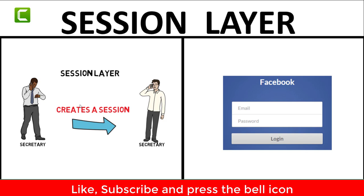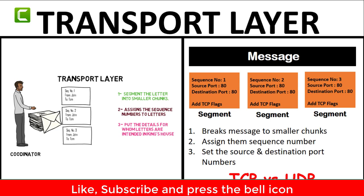In the third layer, the session layer, the secretary established a session with the French palace. Similarly in the OSI model, the session layer lets you sign in once and use resources until session expiration — you don't have to authenticate yourself for each packet, as in Facebook. In the fourth layer, the transport layer, the coordinator segmented letters into smaller chunks, gave them sequence numbers, and added the name of the sender and receiver. The transport layer does the same: it segments the larger message, assigns sequence numbers, and adds the port numbers of the destination and sending applications.